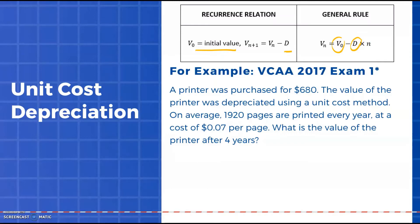Just a reminder: you are taking your initial value and your value of D and placing them into this general rule form. This is another modified exam question from 2017. A printer was purchased for $680, and the value of the printer was depreciated using unit cost. On average 1,920 pages are printed every year at a cost of 7 cents or $0.07 per page. What is the value after four years? I could apply the recurrence relation until I reach four years, but we're talking about 1,920 pages per year for four years, so it would take a fair bit of time. It's going to be easier to put this into a general rule form.